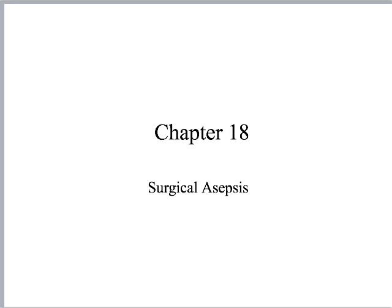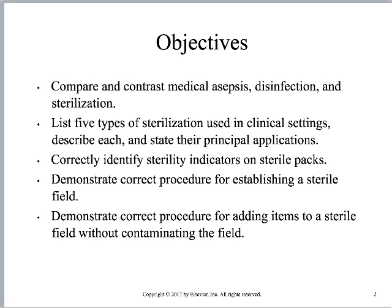We're going to be talking about Chapter 18 in our textbook, Surgical Asepsis. Here are some learning objectives that the textbook identified. We want to talk about medical asepsis, which was previously defined in Chapter 9, and revisit that. We'll talk about disinfection and sterilization, the types of sterilization used in hospitals, sterility indicators on packages, establishing a sterile field, and ways to add objects to the sterile field.